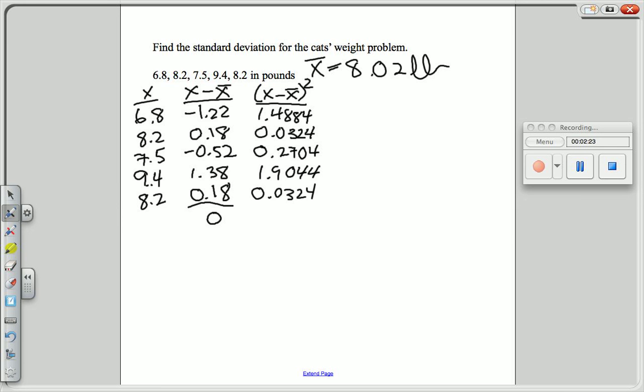Now to actually find the variance first, we're going to add these five numbers together. When we do that, we get 3.728.